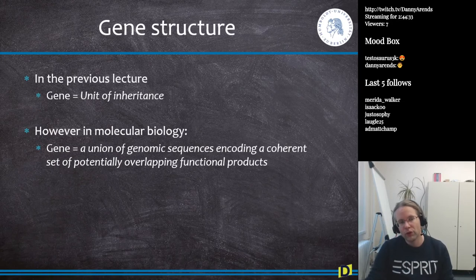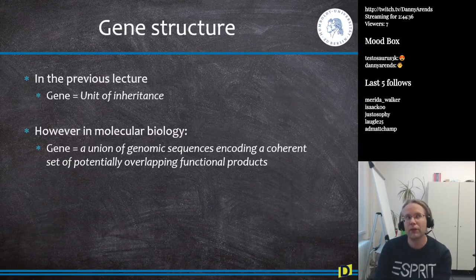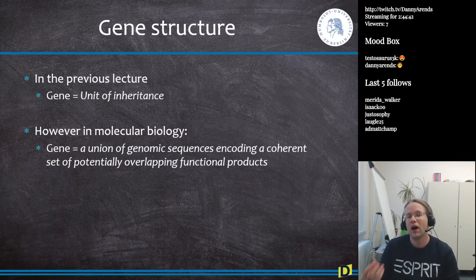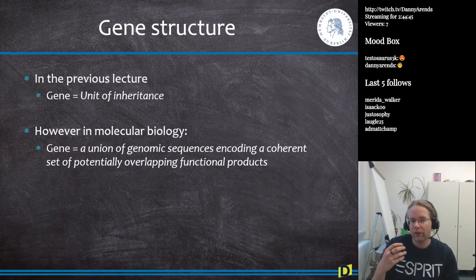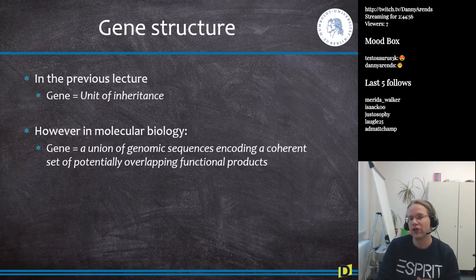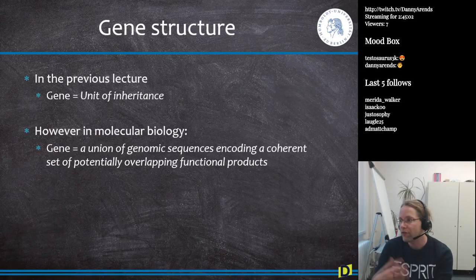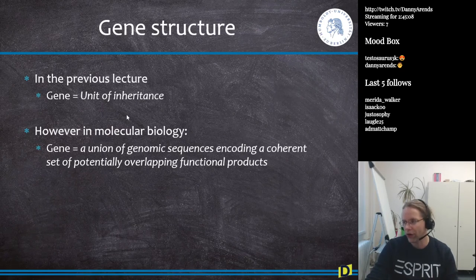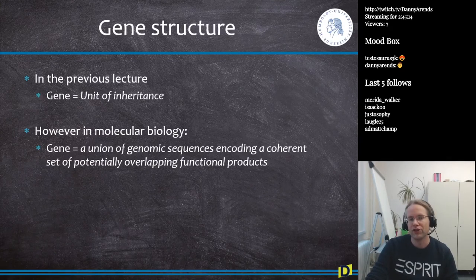Now, a few words about genes and gene structure. In the last lecture, we discussed a gene as a unit of inheritance. In this lecture, I want to show what a gene is in molecular biology. In molecular biology, a gene is defined as a union of genomic sequences encoding a coherent set of potentially overlapping functional products — a very different definition — and I will explain this by showing examples of different gene structures.